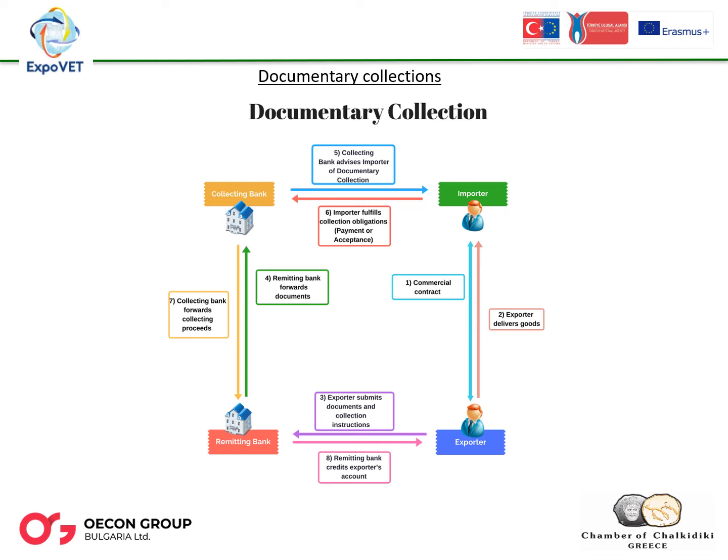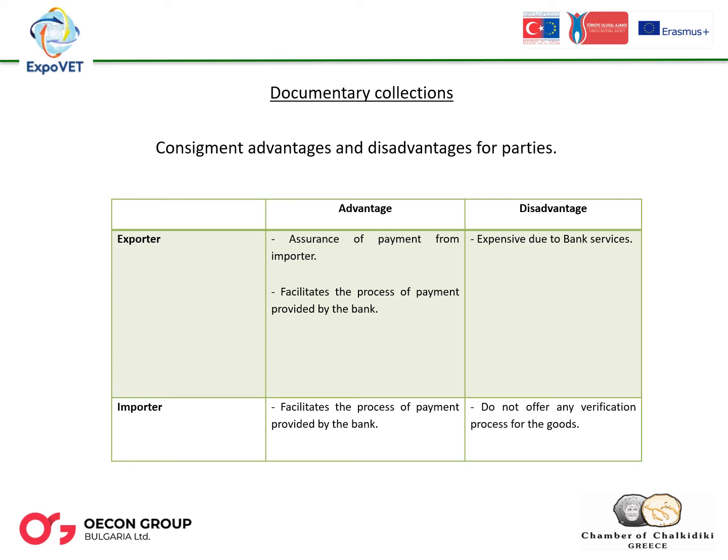The process in a documentary collection transaction is as follows: (1) The goods are sent. (2) The exporter delivers to his or her bank the representative documents of the merchandise and instructions on what to do with them. (3) The exporter's bank forwards the documents and instructions to the importer's bank. (4) The importer's bank notifies the exporter of the existence of the remittance. (5) The importer pays and the bank delivers the documents complying with the instructions for the remittance given by the exporter. (6) The presenting bank delivers the funds to the sending bank, notifying it via SWIFT. (7) The remittance bank enters the money into the exporter's account. (8) With the documents, the importer can remove the merchandise from customs.